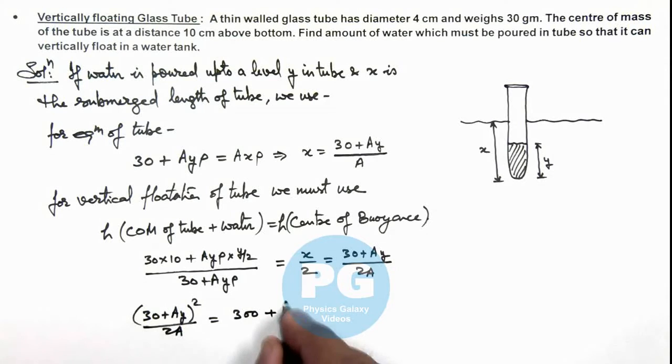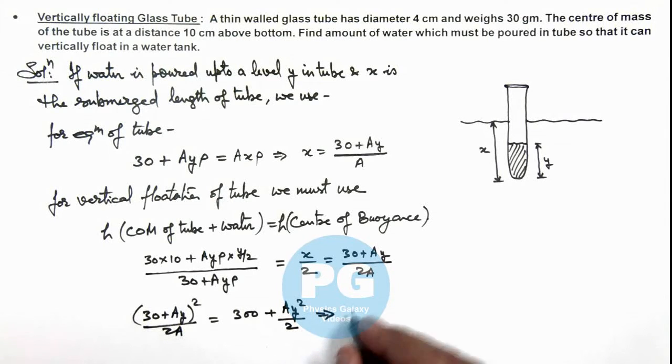Plus A_y times y square by 2. If we simplify this relation here, it gives the value of y which is 10 minus 15 by A_y. I am leaving it as an exercise for you to simplify this equation and verify. The value of y we'll be getting is 10 minus 15 by A_y.